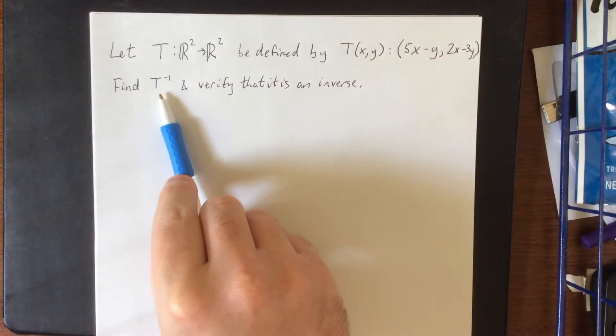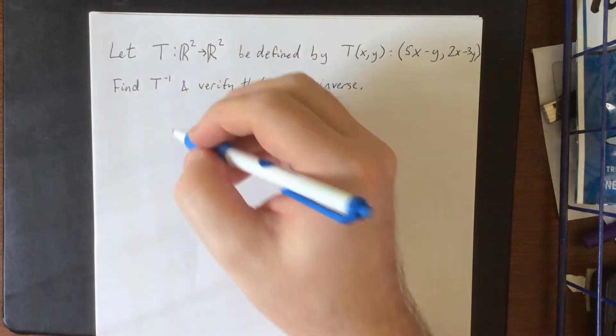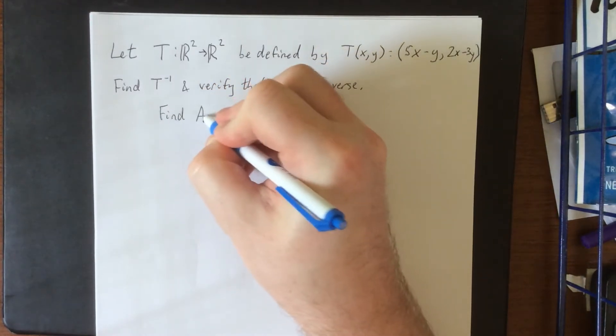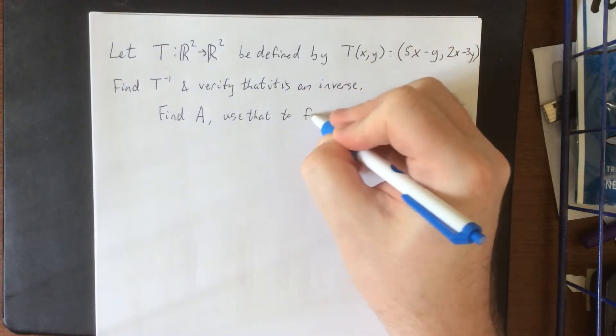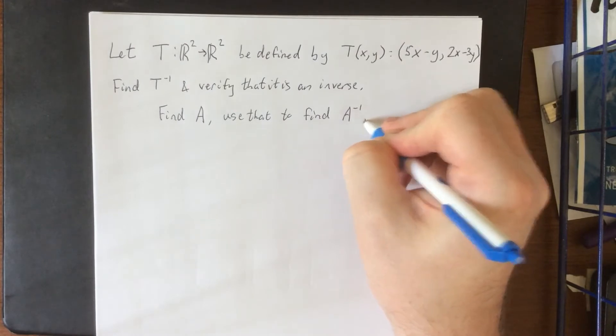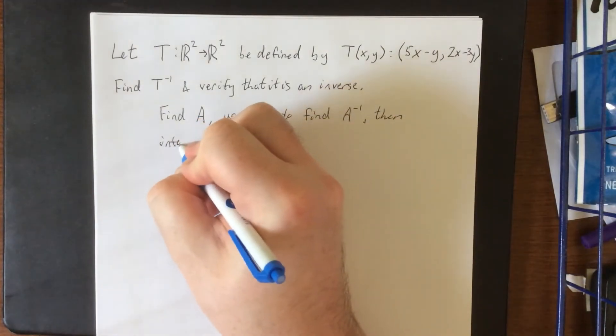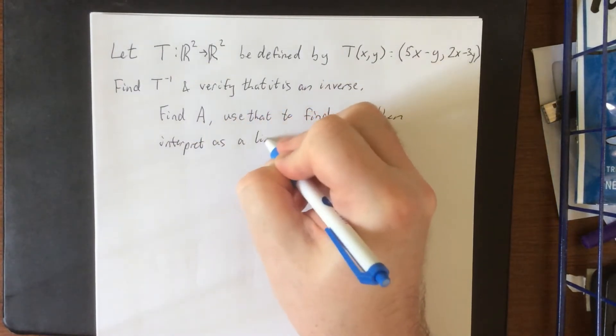What we're going to do is find T inverse and verify that it is in fact the inverse by taking the composition of the inverse with the original function. In order to do so, we're going to find the matrix of the transformation, and then use that to find the matrix of the inverse transformation, and then interpret as a linear transformation.